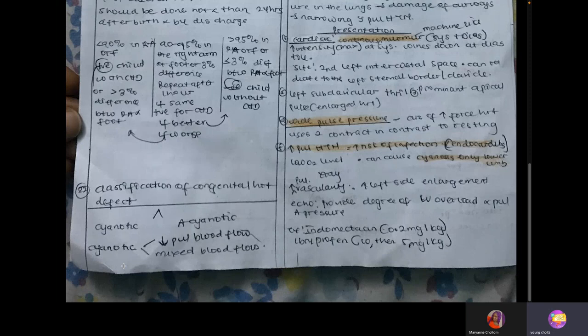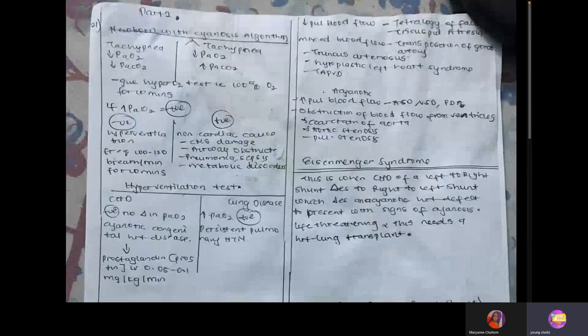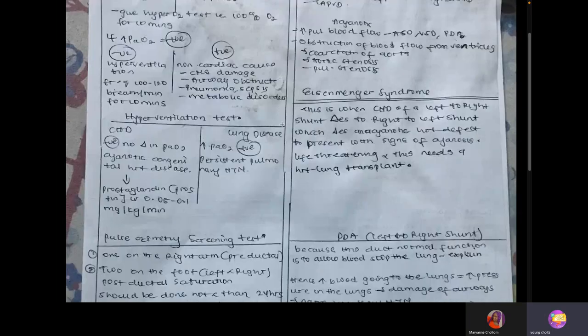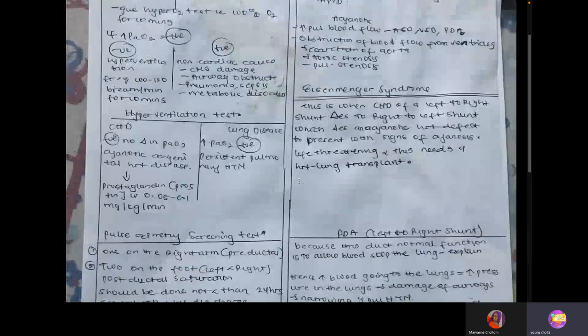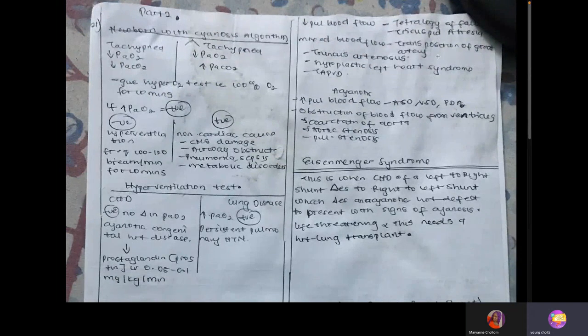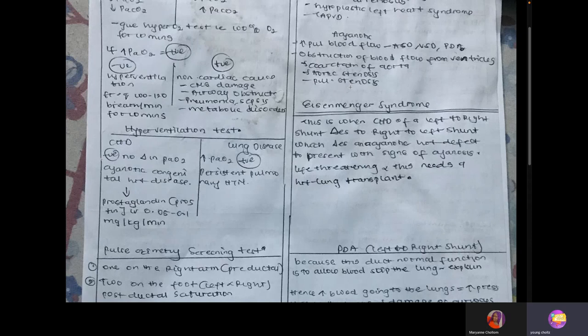The classification of heart disease: cyanotic heart disease presents with cyanosis. Decreased pulmonary blood flow examples include tetralogy of Fallot and tricuspid atresia. Cyanotic due to mixed blood flow includes transposition of great arteries, truncus arteriosus, and hypoplastic left heart syndrome. Acyanotic with increased blood flow includes ASD, VSD, and patent ductus arteriosus. Obstruction of blood flow from the ventricles includes coarctation of aorta, aortic stenosis, and pulmonary stenosis.